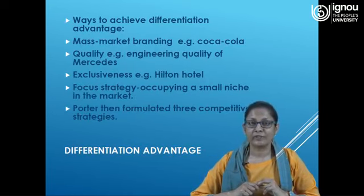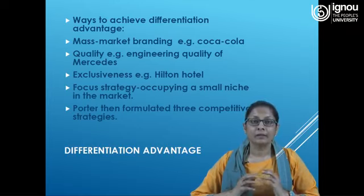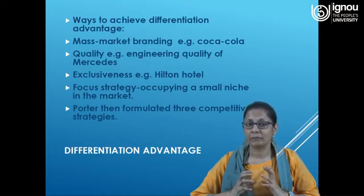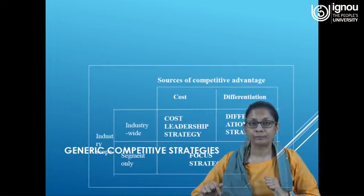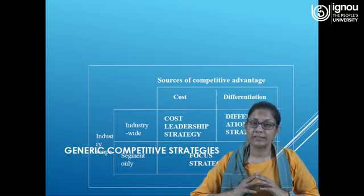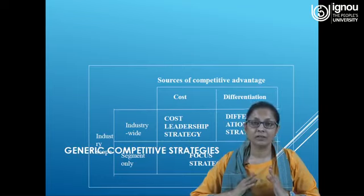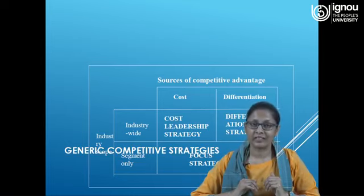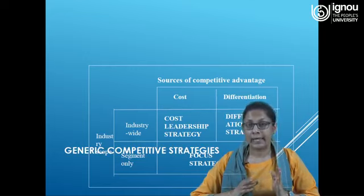Ways to achieve differentiation advantage include: mass market branding, quality, exclusiveness, and focus strategy occupying a small niche market. Based on these issues, Porter formulated three basic competitive strategies: the cost leadership strategy, differentiation strategy, and focus strategy. In the matrix, the sources of competitive advantage are cost and differentiation on one axis, and on the other axis you have industry-wide spread and segment-wise spread. When you talk about industry-wide spread, it relates to cost leadership and differentiation strategies.